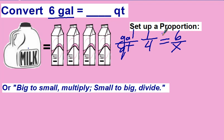You can cross-multiply, or you can use equivalent fractions. Using equivalent fractions here, you get 24. So we know 4 times 6 is 24. 24 quarts in 6 gallons.